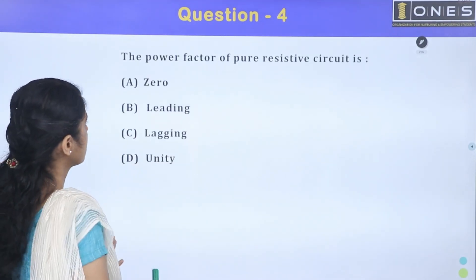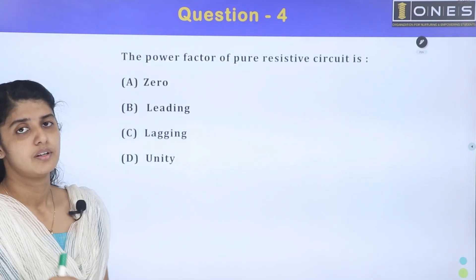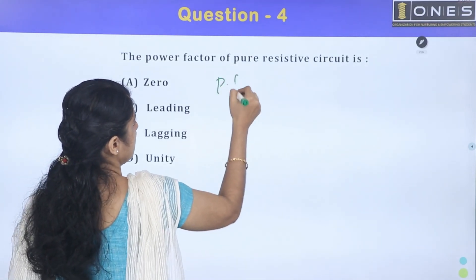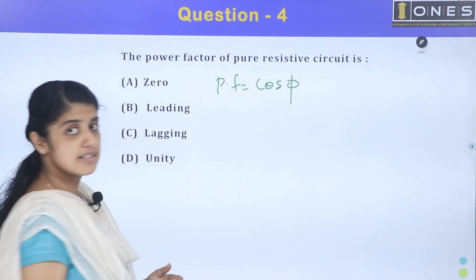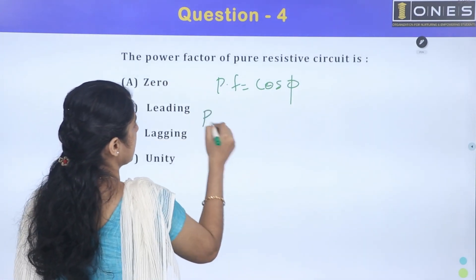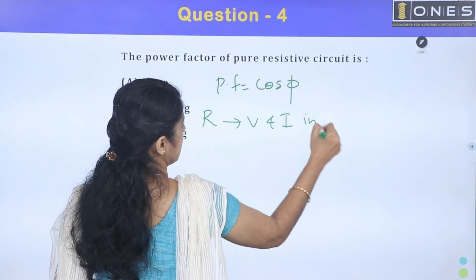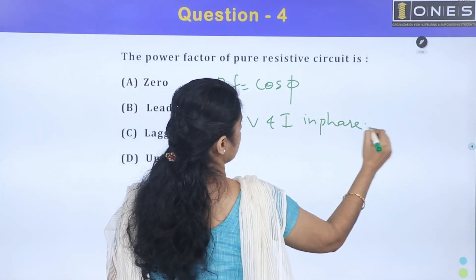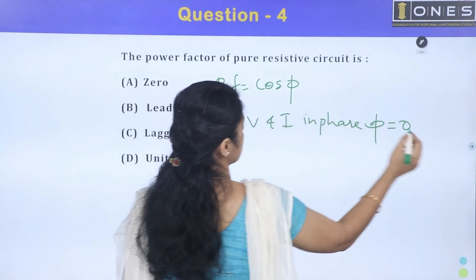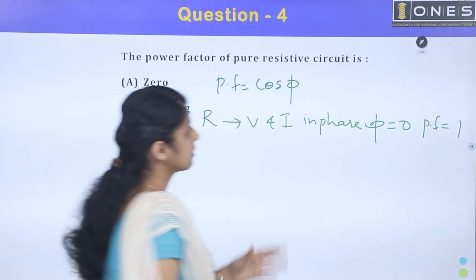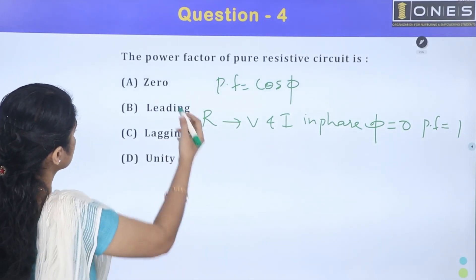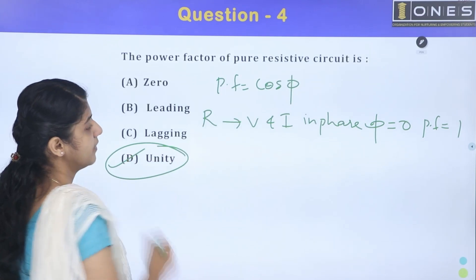Next question: power factor of a pure resistive circuit. Power factor is defined as cos φ, where φ is the angle between voltage and current. In a resistive circuit, voltage and current are in phase, so φ equals 0. Therefore cos φ equals cos 0 equals 1. The power factor of a pure resistive circuit is unity (1).